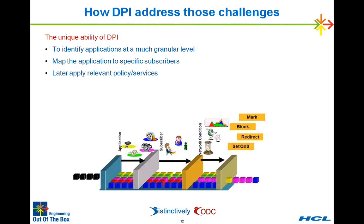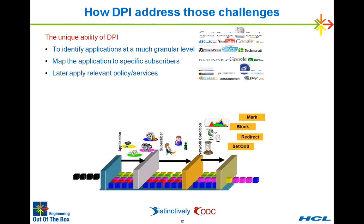We've suggested that DPI would enable service providers to offer value-added services. Here we'll look at how DPI will address those challenges — how DPI is better positioned than other devices. The unique ability comes from packet inspection. DPI has the ability to inspect both the payload and the header, and it can match the payload across consecutive packets to identify a pattern and figure out which application each packet belongs to. That kind of granularity will not be provided by any other device.